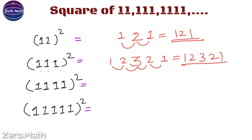Now let's figure out the square of 1111. The number of digits are 4, so write down 4. On the right: 4 minus 1 is 3, 3 minus 1 is 2, and 2 minus 1 is 1. On the left hand side: 4 minus 1 is 3, 3 minus 1 is 2, and 2 minus 1 is 1.